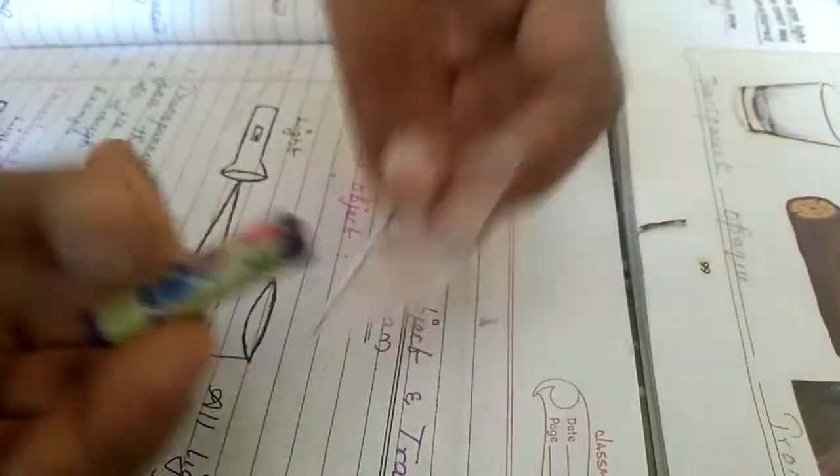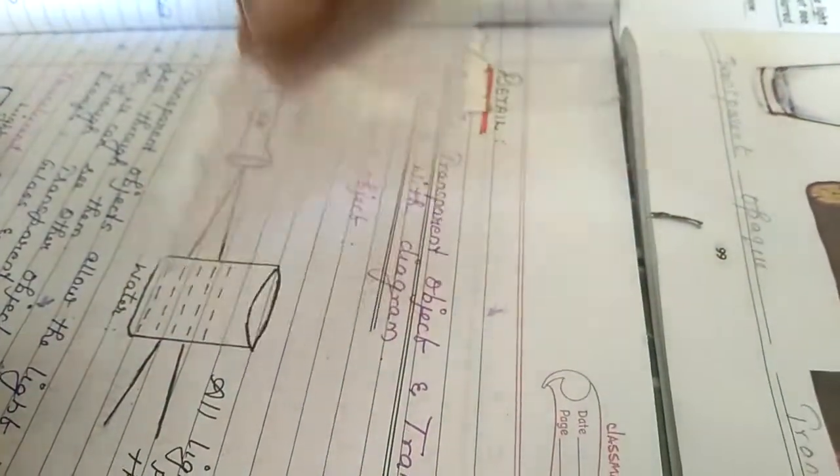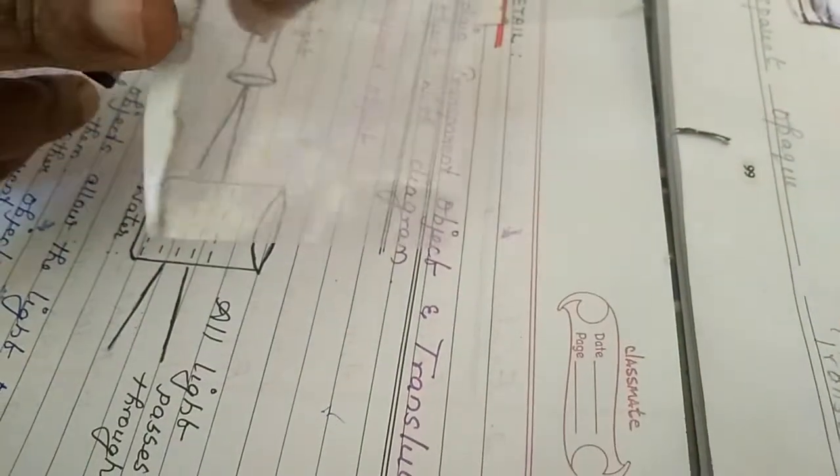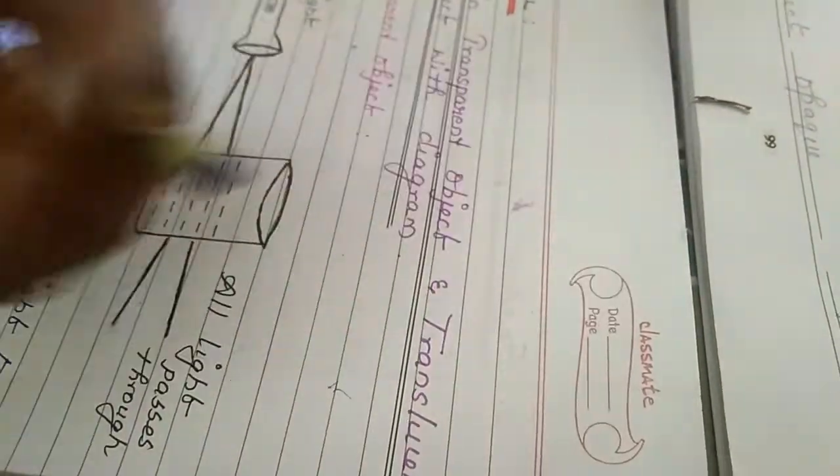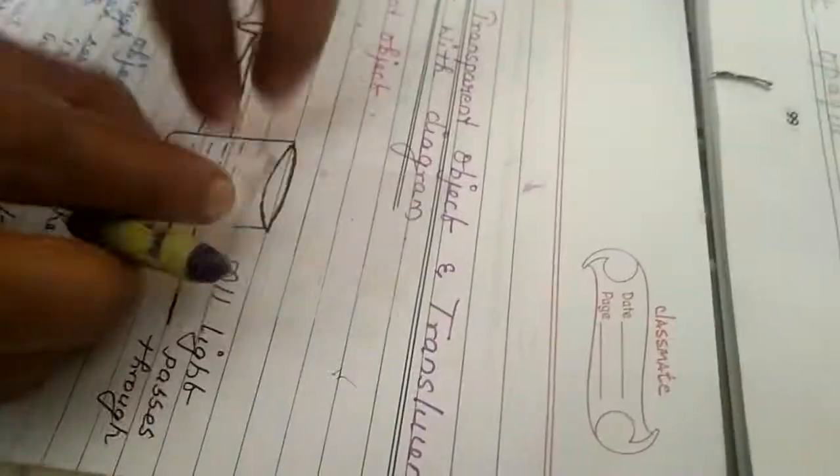And for translucent you have to take some crayons and we will color on it, so we can get not a clear image, blur image we use for this translucent.